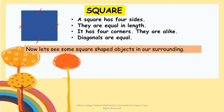Square: A square has four sides. They are equal in length. It has four corners, and the corners are alike. The diagonals of a square are equal.